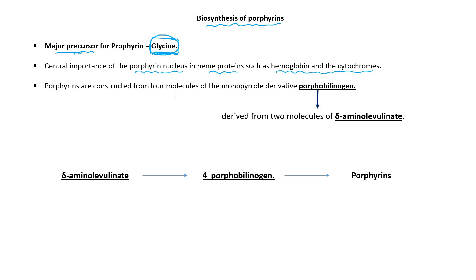How is porphyrin formed? Porphyrins are constructed from four molecules of porphobilinogen. Porphobilinogen is a monopyrrole derivative. One molecule of porphobilinogen is derived from two molecules of delta-aminolevulinate. So from delta-aminolevulinate, porphobilinogen is formed.